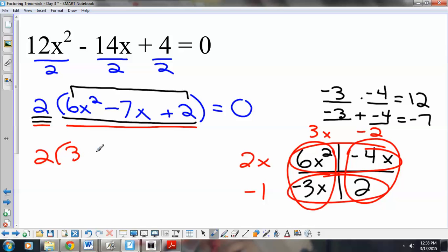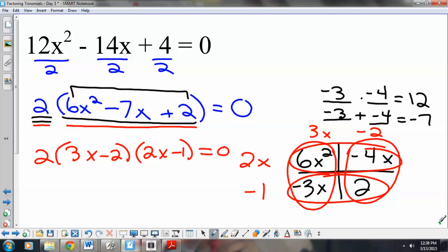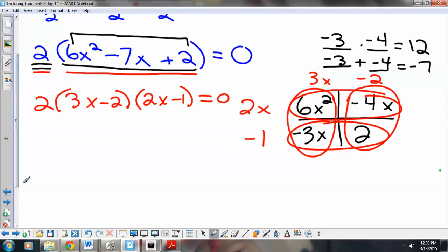Now, we have an equation, so we know that we need to solve. The zero product property that we learned about says to set each factor equal to 0. Now, technically, 2 is one of our factors, so I would set it equal to 0. But, does it even make sense that 2 equals 0? Definitely not. 2 does not equal 0. That is not true.